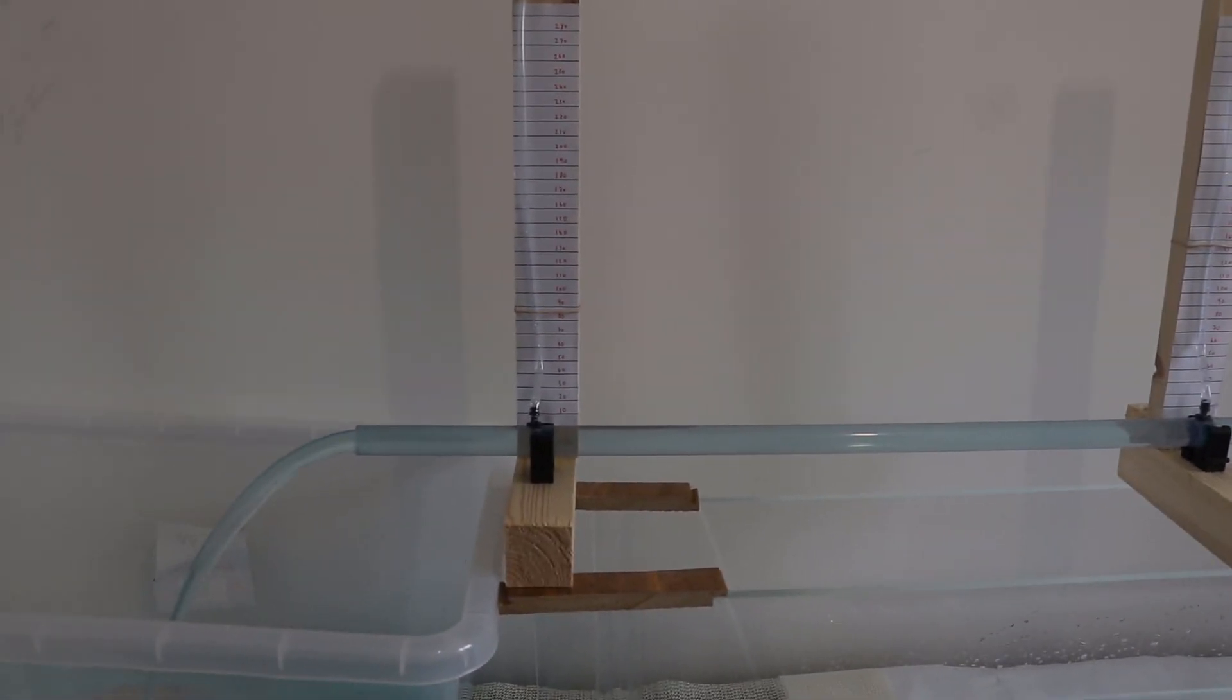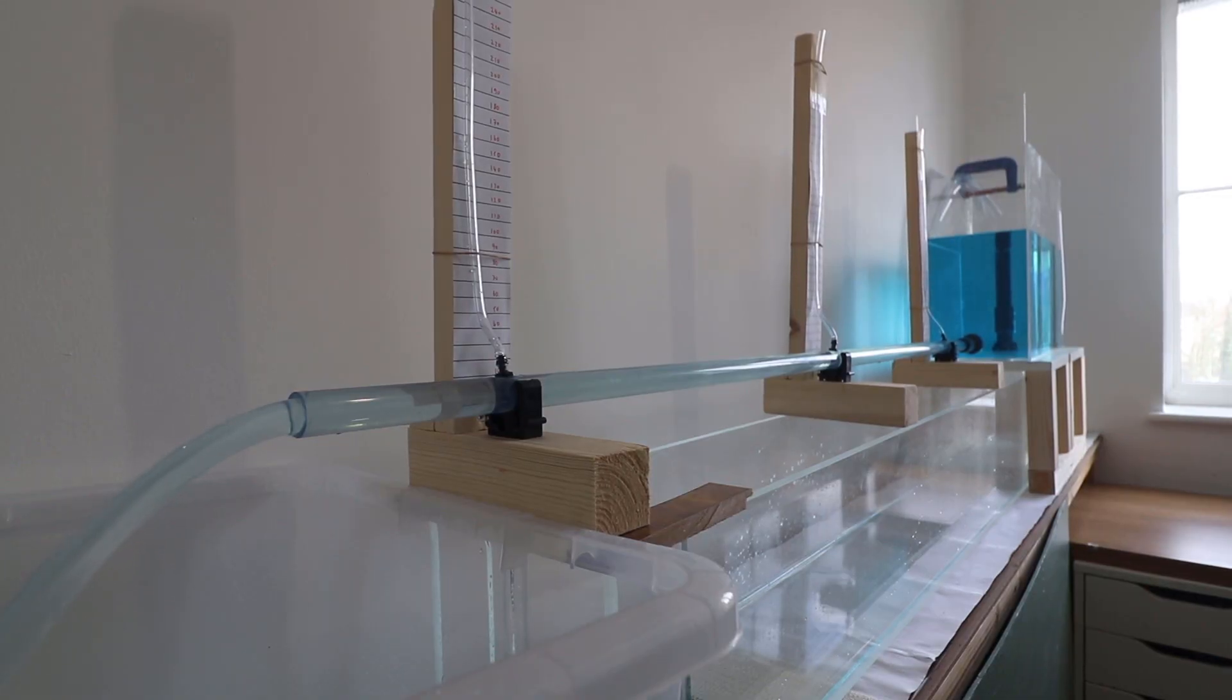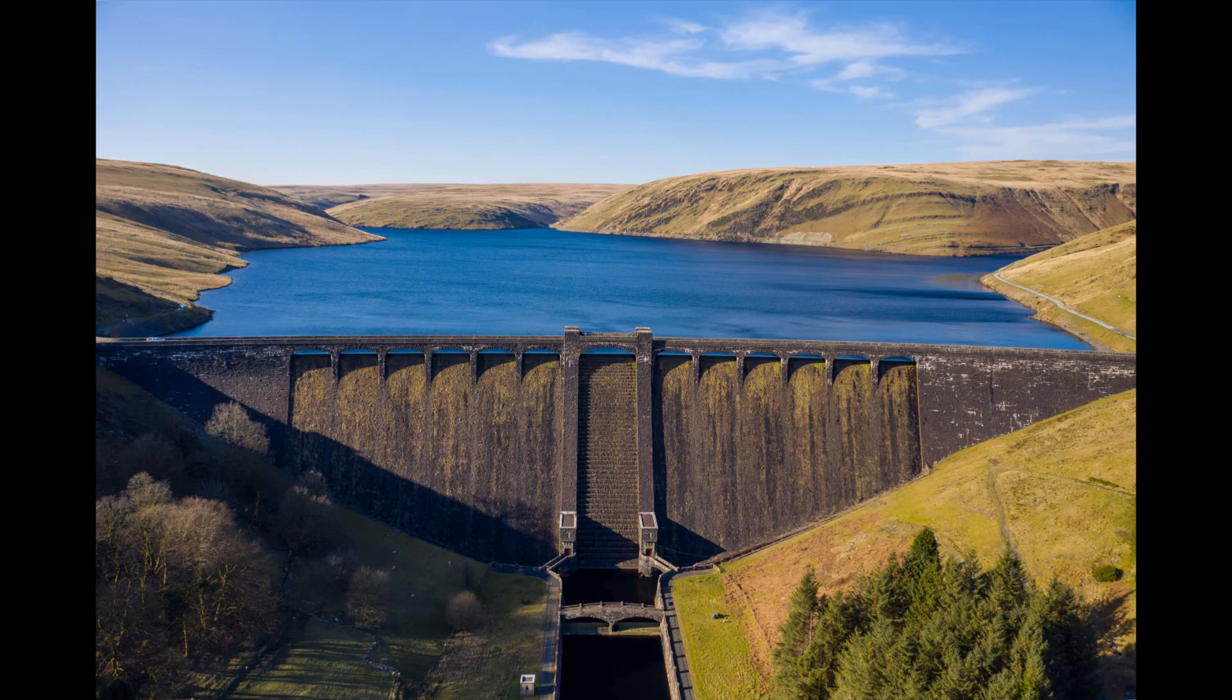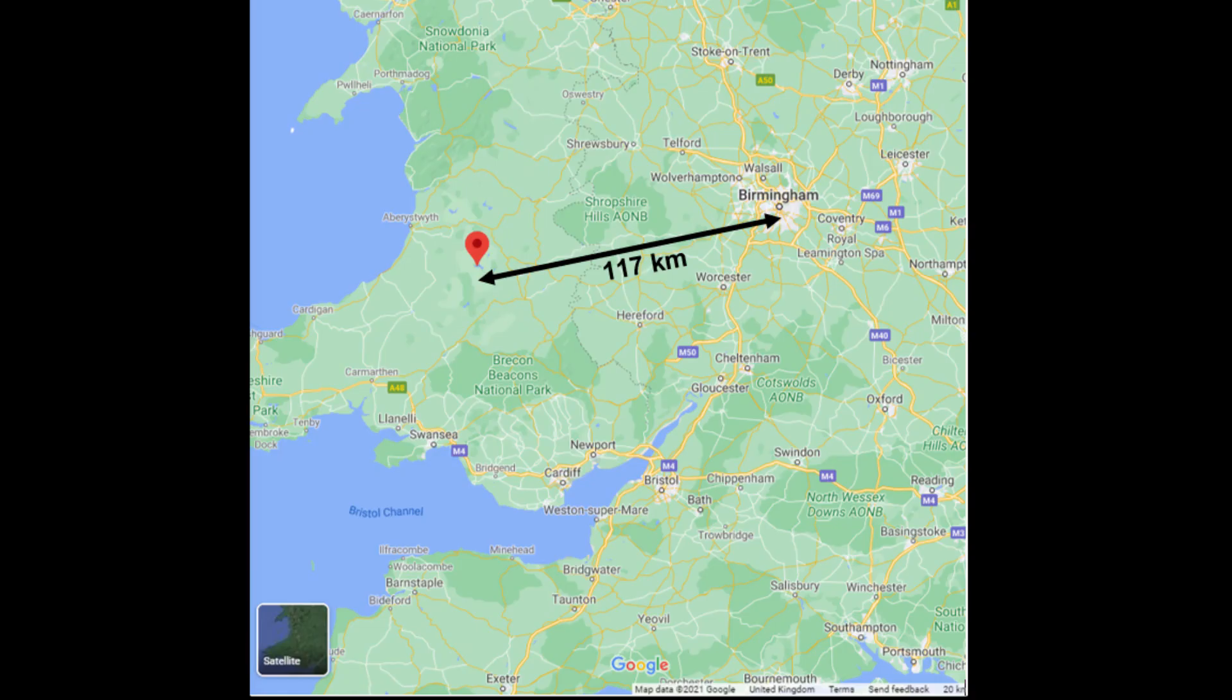In my model tank the difference in elevation of 0.209 meters was sufficient to drive water through our 1.25 meter long pipe. In the real world example looking at Elan Valley, the difference in elevation of just over 50 meters is sufficient to drive water along the 117,000 meters of pipe from the Elan Valley to Birmingham.